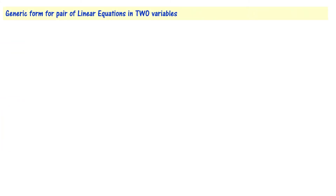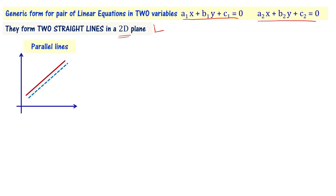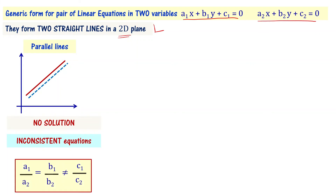Now let's summarize. The generic form for a pair of linear equations is a1x + b1y + c1 = 0 and a2x + b2y + c2 = 0, forming two straight lines in the 2D plane. If the lines are parallel, there exists no solution. The relation is: a1/a2 = b1/b2 ≠ c1/c2. You can immediately determine from this relation — without drawing the graph — that there is no solution, and the equations are an inconsistent set. Please note this formula and relation.